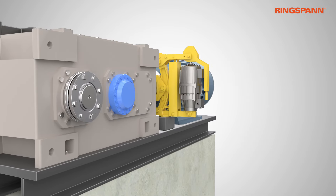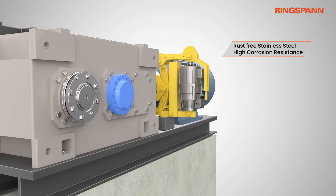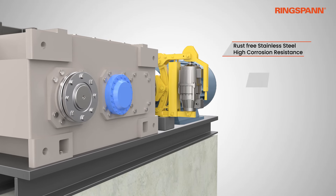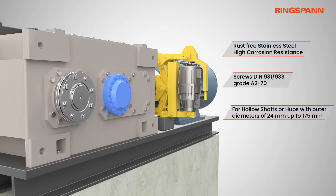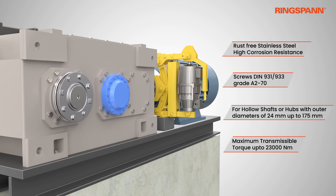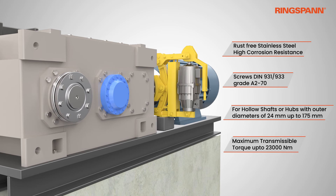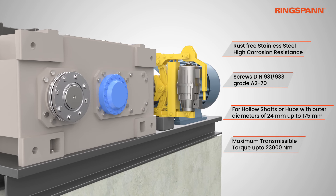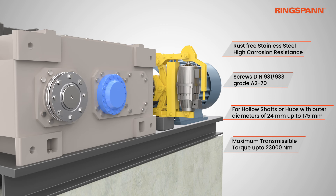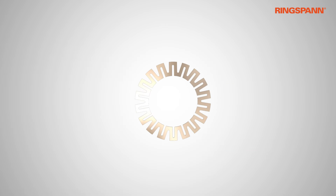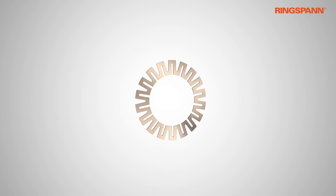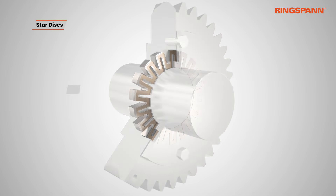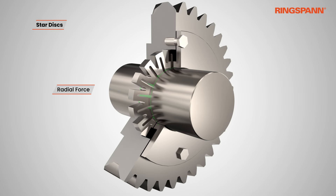For highly corrosive environments, Ringspan also offers shaft hub connections in stainless steel or with nickel coating. For applications where frequent clamping and release is required in a short clamping area, Ringspan offers Stardisks, which can be used in multiple sets for transmitting desired torque or force.